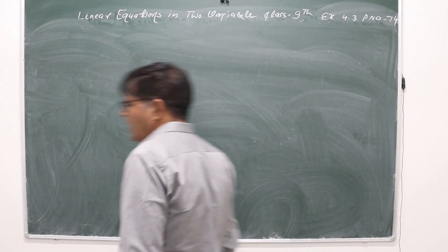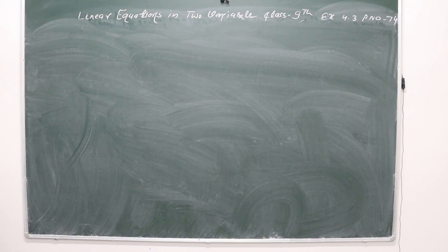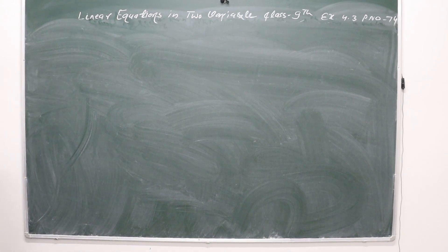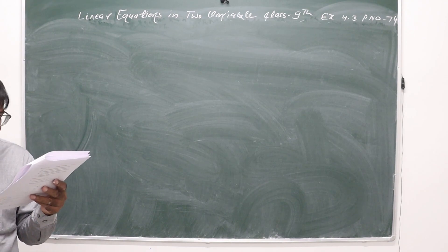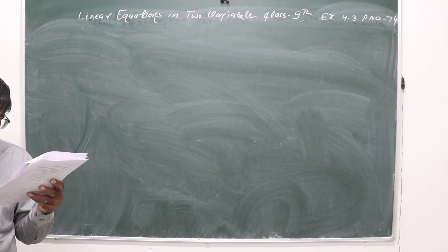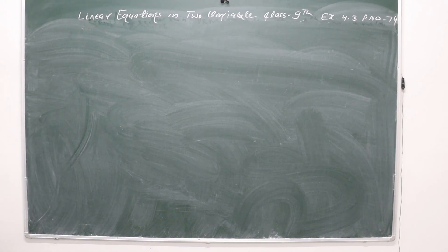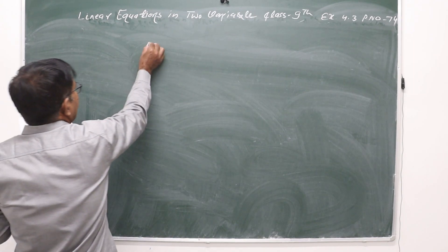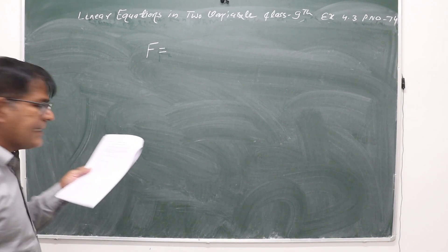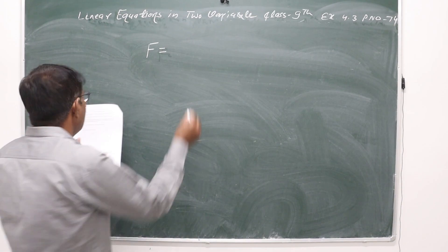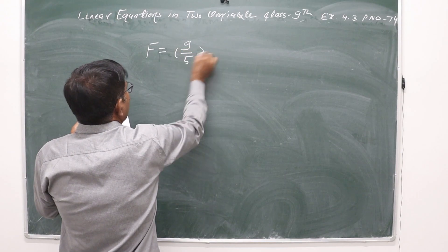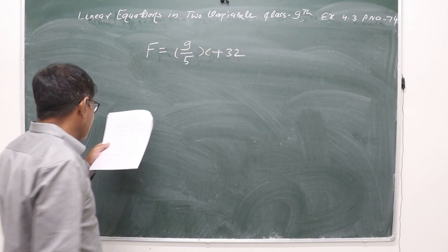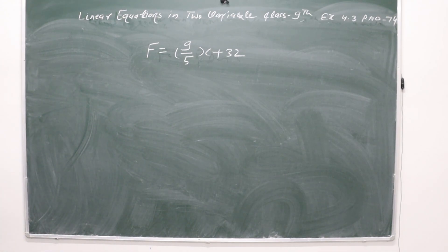Now question number 8, again an important question. In countries like the USA and Canada, temperature is measured in Fahrenheit, whereas in countries like India it is measured in Celsius. There is a linear equation relating the two: Fahrenheit = 9/5 × Celsius + 32. This is the interrelation between Fahrenheit and Celsius scale, which you also read about in science.